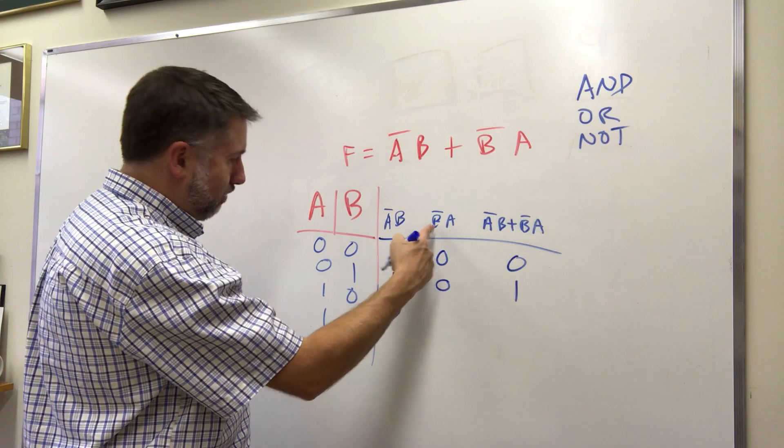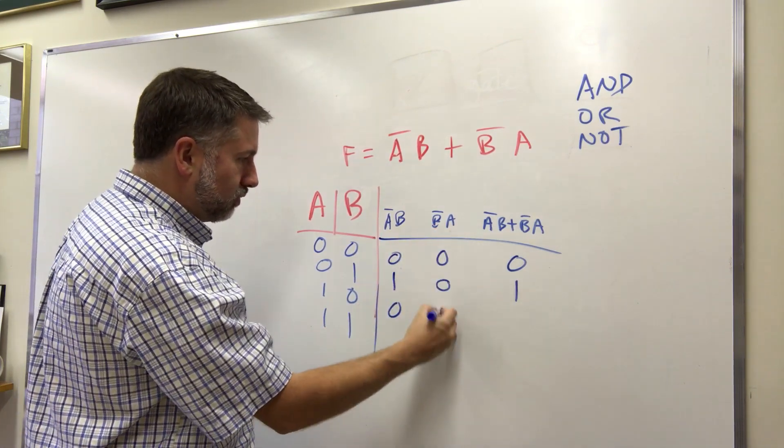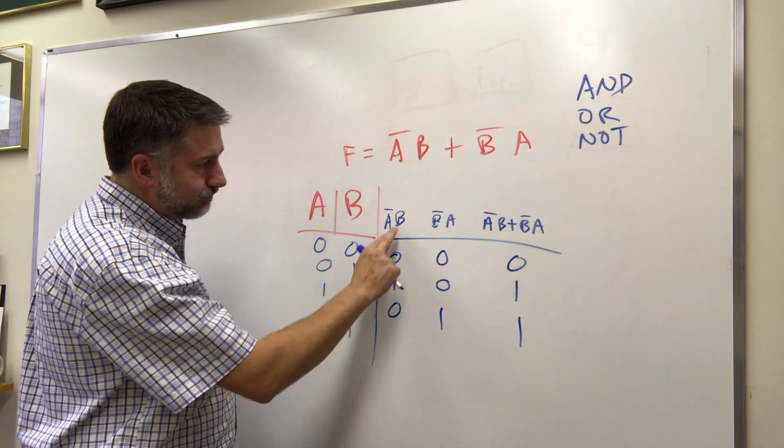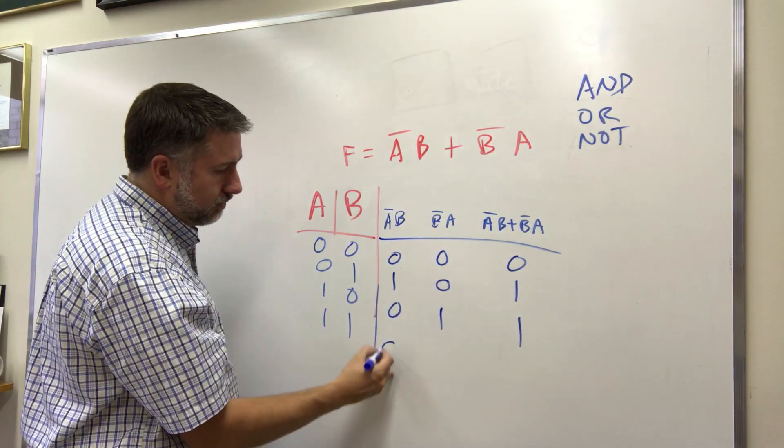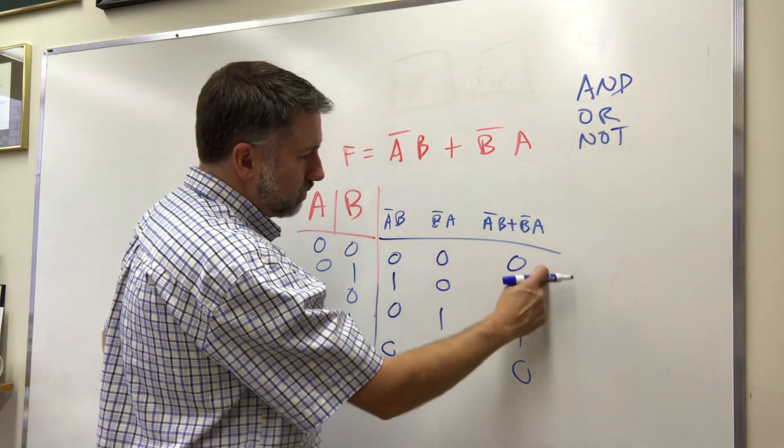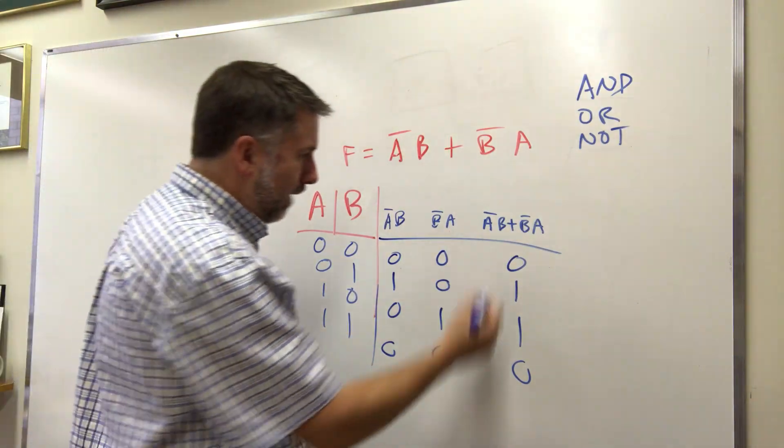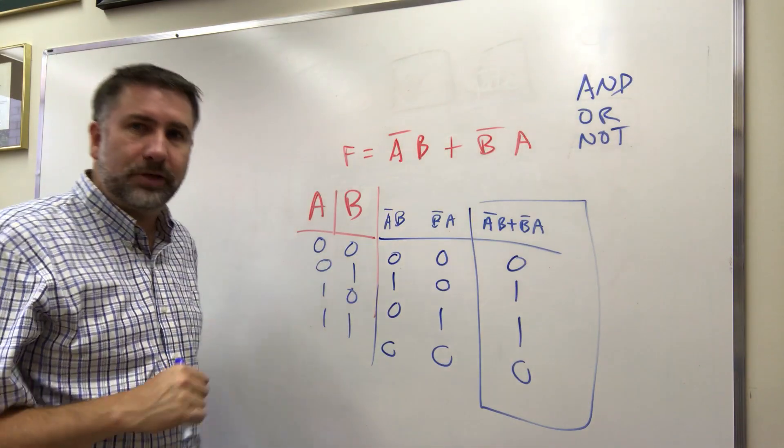One zero, well if A is one A prime is zero, zero zero zero, but if B is zero B prime is one, one one gives you one and again one. Now if they're both one that's a zero one which is zero, that's a zero one which is zero and we get zero.